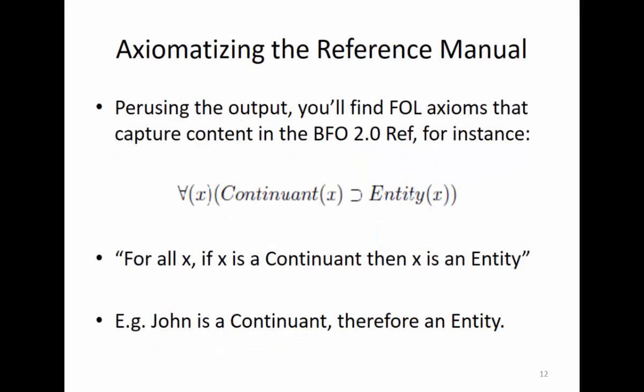Here's an example - you can pull this straight out of the text file. You'll find full axioms. So, for all X, if X is a continuant, then it's an entity. It's something you would find in the BFO reference manual with a specification, or at least this kind of reasoning, and this would be the way you captured it with first order logic.